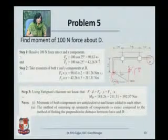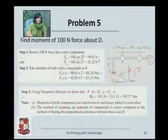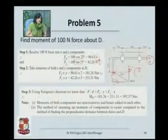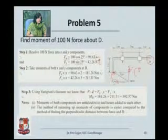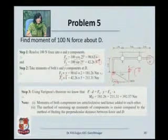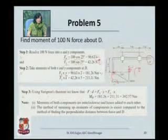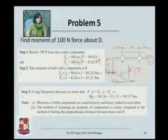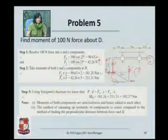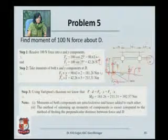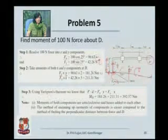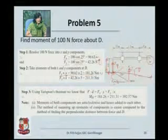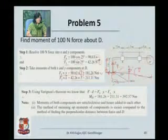First of all, we need to find out fx and fy. Cos 25 is the horizontal component and sin 25 is the vertical component. The directions of the components are also given. When we take moments about D, the perpendicular distance of fx from D is 2 meters — fx into 2 is the moment caused about D. Similarly, the vertical component fy is going to act at what distance? That is 1 plus 3 plus 1, that is 5 meters. So you have a moment due to fx and a moment due to fy, and the perpendicular distances are 2 and 5.